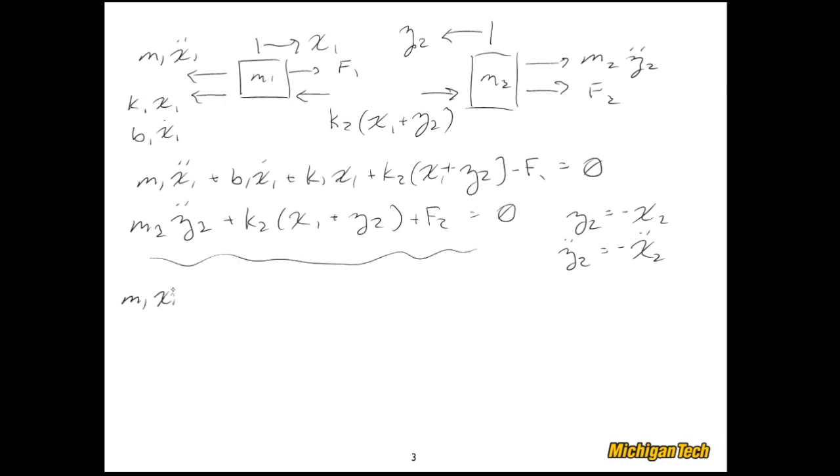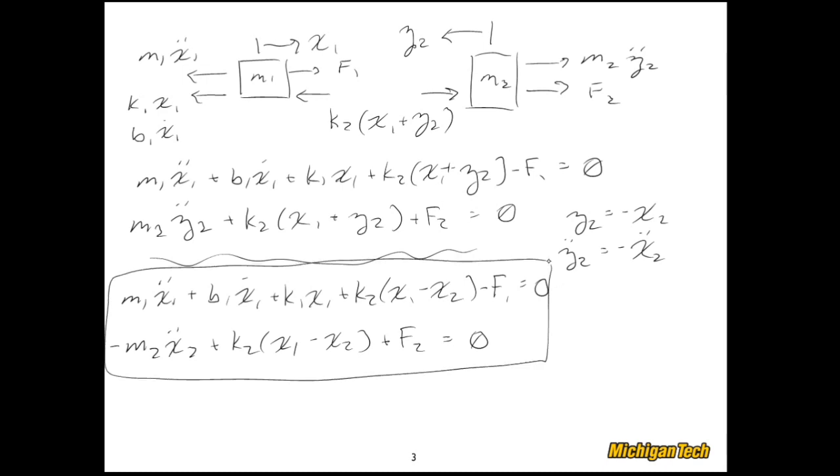And if we make those two substitutions in these two equations, then what we get is the following. Oops. That shouldn't be an X2. That should be an X1. And I'll box these two. Try to catch them. Okay, there we go. The first equation is exactly what we had on the previous page. The second equation, if we flip the sign of everything, boom, boom, boom, now we get exactly the same equation that we had on the previous page. So indeed, they're the same.